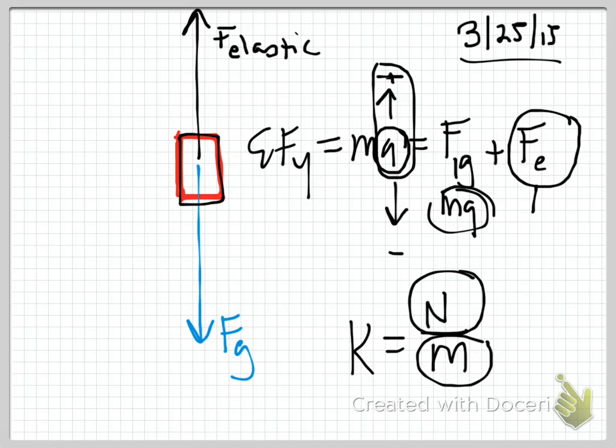When a spring is deformed by this many meters, it produces this many newtons of force. So the elastic force is just equal to its k value times how many meters you deform it. So that would be delta x.